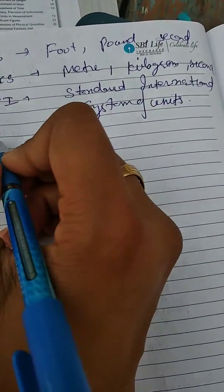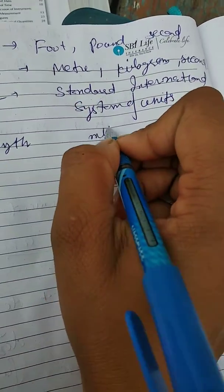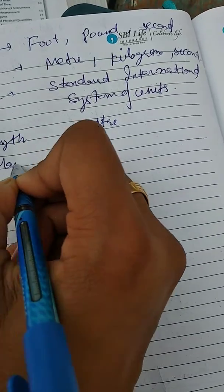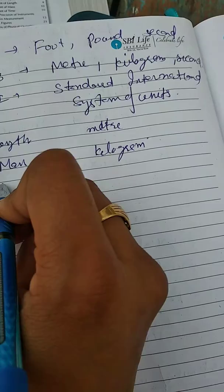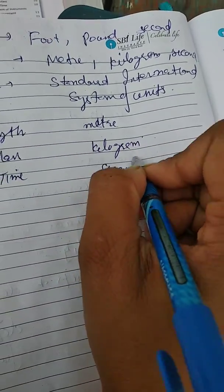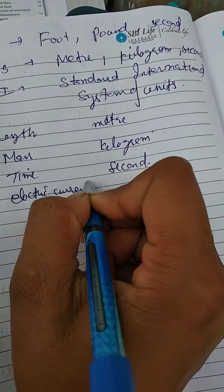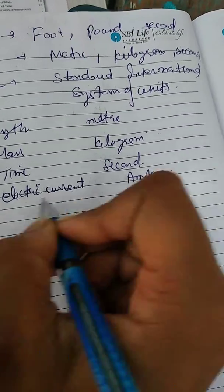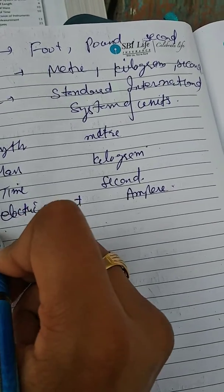First is length, unit is meter. Second is mass, unit is kilogram. Third is time, unit is second. Fourth is electrical current, unit is ampere. Fifth is temperature, unit is Kelvin.